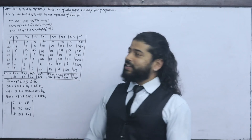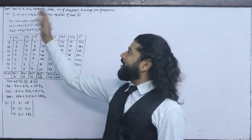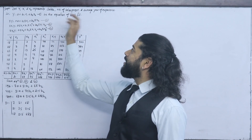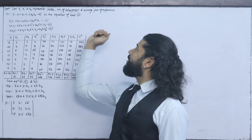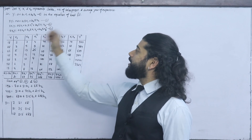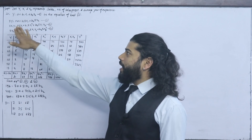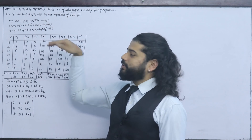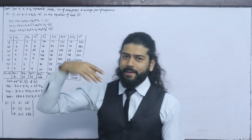Here, y represents sales, x1 represents number of salespersons, and x2 represents average years of experience. So the equation is y equals a plus b1x1 plus b2x2, same as the previous class.